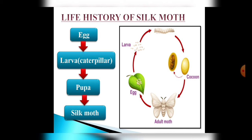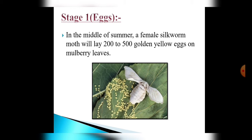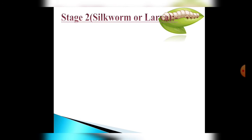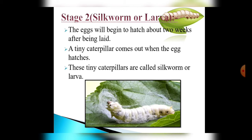So let's understand this process stage by stage. In stage 1, the female silk moth lays tiny golden eggs on mulberry leaves. In stage 2, these eggs begin to hatch in 2 weeks and tiny caterpillars come out. These are called larva or silkworm. Here you can see a picture of the silkworm, or larva.